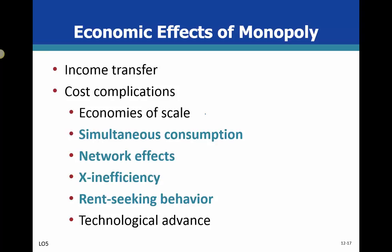Regulation does limit the monopolist's ability to maximize profit. One effect of monopoly is simultaneous consumption — consumers find ways around high prices through the internet, pirating, or black markets. As prices go up, people still want the product and will find a way to get it.